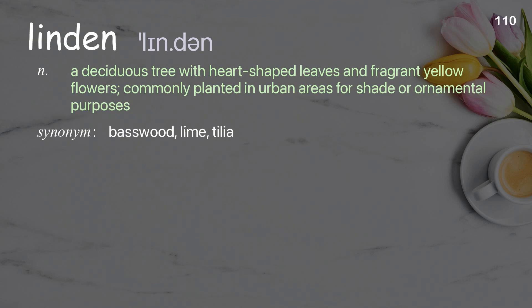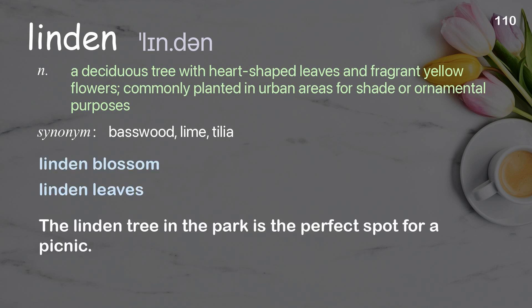Linden: A deciduous tree with heart-shaped leaves and fragrant yellow flowers, commonly planted in urban areas for shade or ornamental purposes. Examples: Linden blossom, Linden leaves. The linden tree in the park is the perfect spot for a picnic.